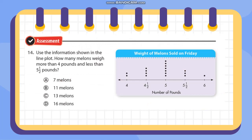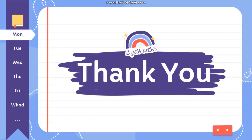Number 14 uses a line plot about melon weights. How many melons weigh more than four pounds and less than five and one-half pounds? More than four pounds includes four and one-half, five, and five and one-half — but the condition is less than five and one-half, so we use four and one-half and five only. Four and one-half has four data points and five has seven — four plus seven equals eleven melons.